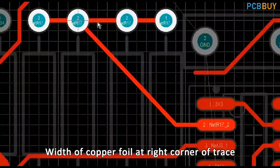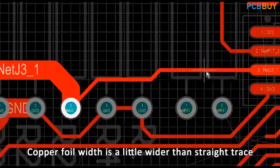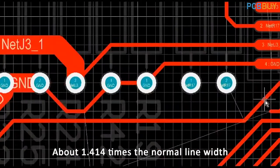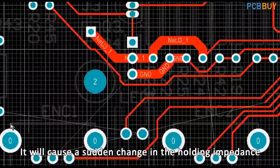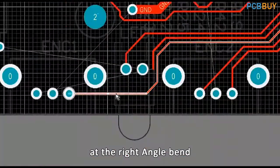The copper foil width at the right corner of a trace is a little wider than a straight trace—about 1.414 times the normal line width. It will cause a sudden change in the characteristic impedance at the right angle bend.